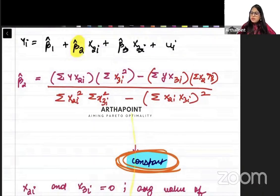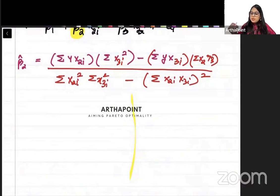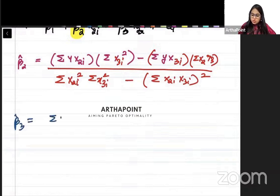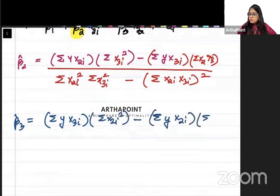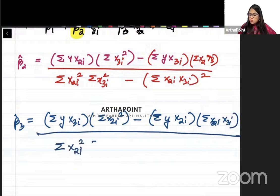Now, the formula of beta 3 will be very simple. Because in beta 3 we just replace x2 with x3 and x3 with x2. So beta 3 hat will be: summation yi x3i times summation x2i squared minus summation yi x2i times summation x2i x3i, divided by summation x2i squared times summation x3i squared minus (summation x2i x3i) squared. These are all deviations from means.